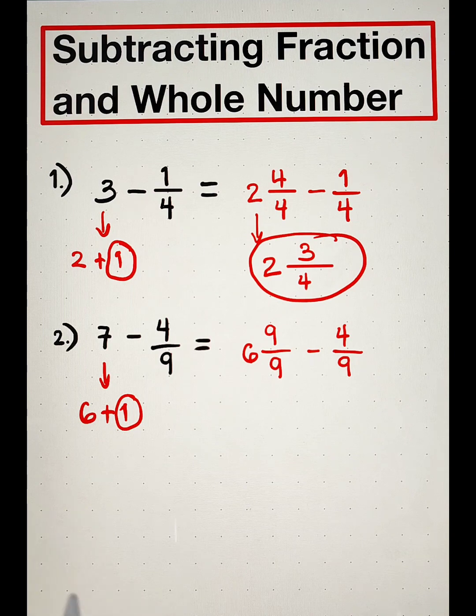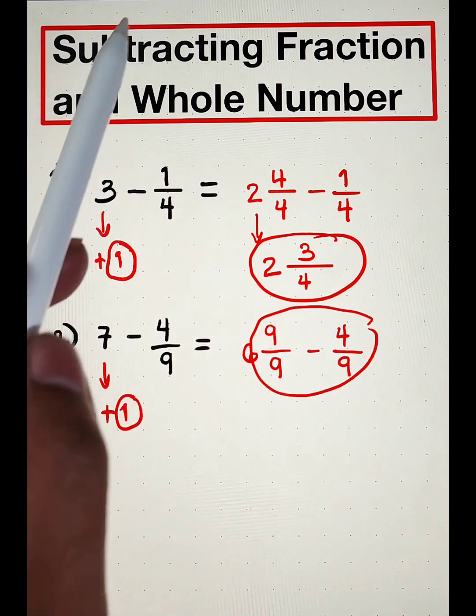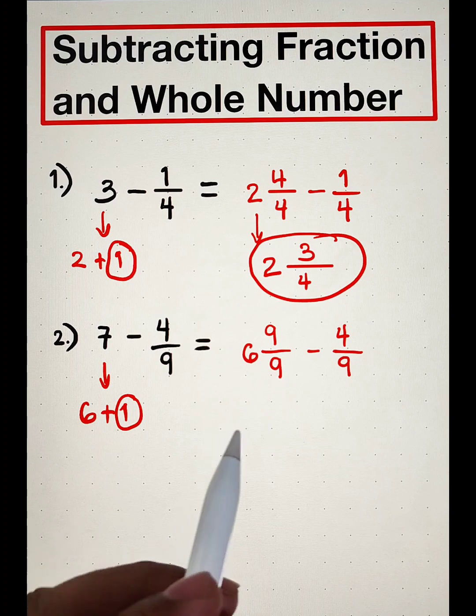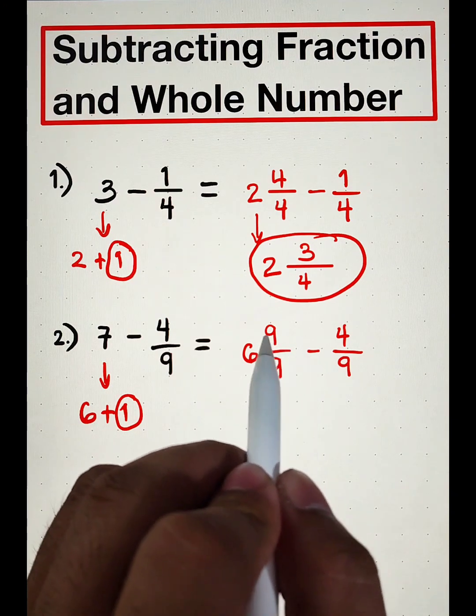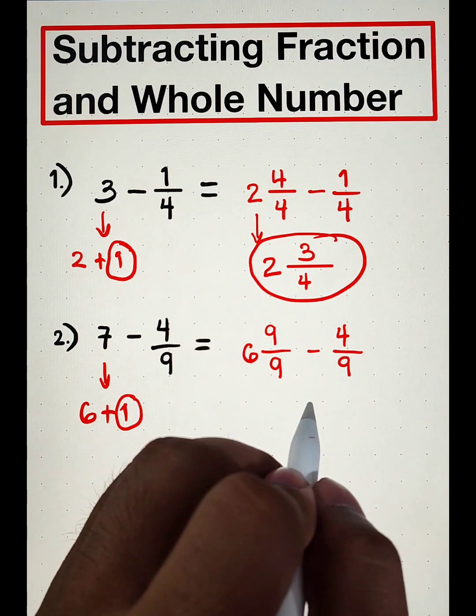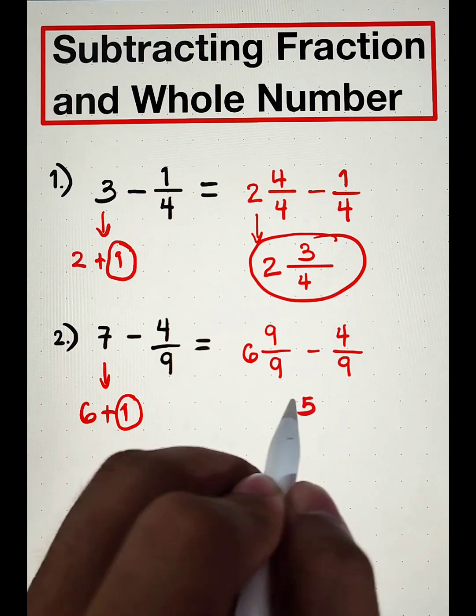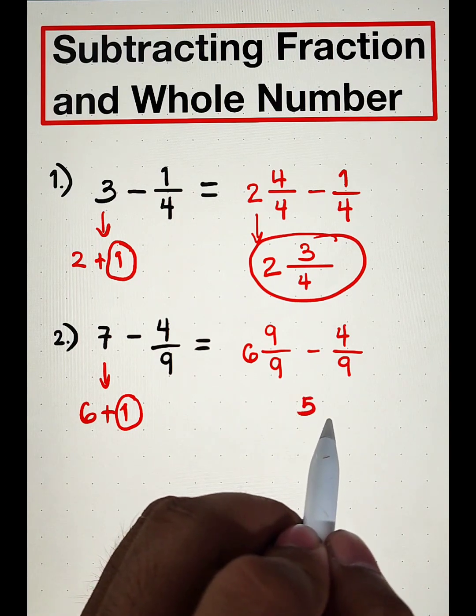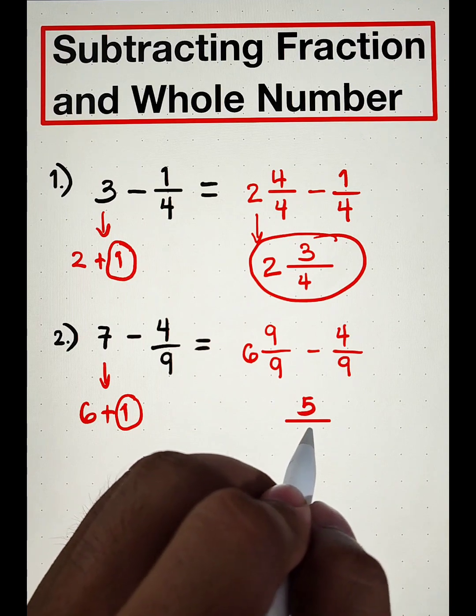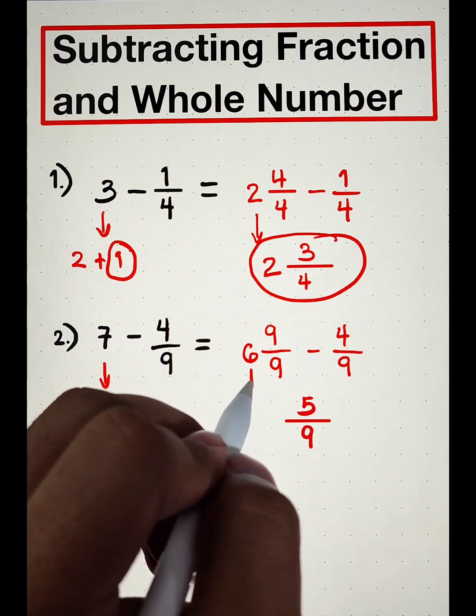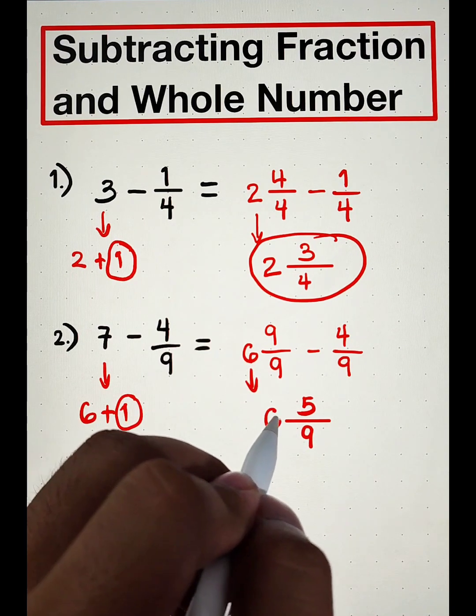In this case, we can directly subtract these fractions. We have 9 minus 4, which is equal to 5. Copy your denominator 9 and attach the whole number 6.